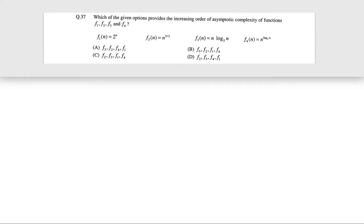Okay, now let us see this question. This question actually came in GATE 2011 and it came for two marks. The question is which of the following options provides the increasing order of asymptotic complexity of functions f1, f2, f3, f4 and they have defined what are these functions.